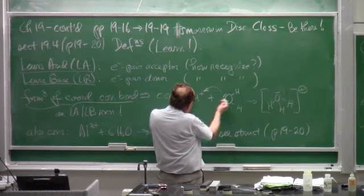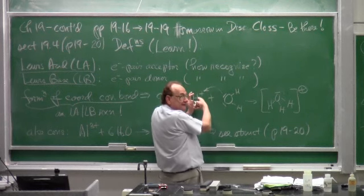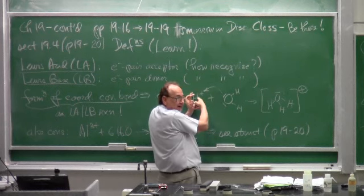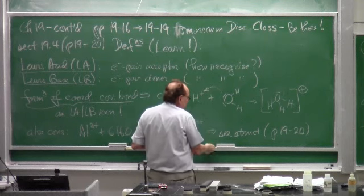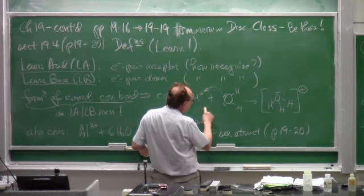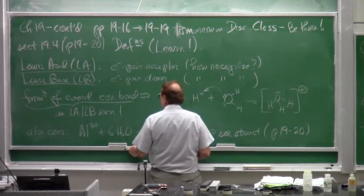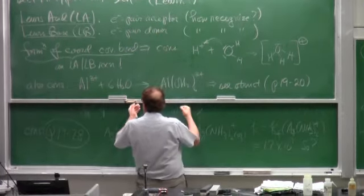That forms the coordinate covalent bond. So we're imagining the electron pair moves. It's really the water molecule clunks H plus, and when they clunk each other, then the electron pair at the same time takes occupation in the empty 1s orbital. And thereby the coordinate covalent bond between H plus and water to make the hydronium ion has been formed.